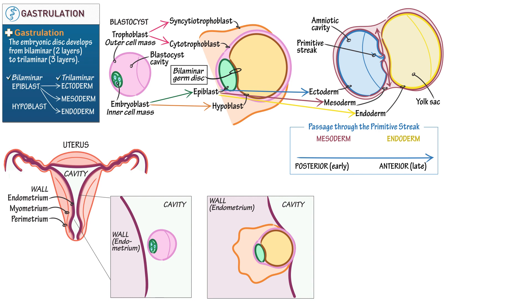Further specify that it's the most lateral — the outermost — mesoderm that passes through the primitive streak first: the extraembryonic mesoderm, followed by the lateral plate, cardiac, and axial mesoderm (the somites). Ultimately, they're followed by the midline mesoderm — for instance, the notochord. You can infer the specific cell lines if you remember lateral first and midline last, ultimately followed by the endoderm. Indicate that the germ disc is now trilaminar.